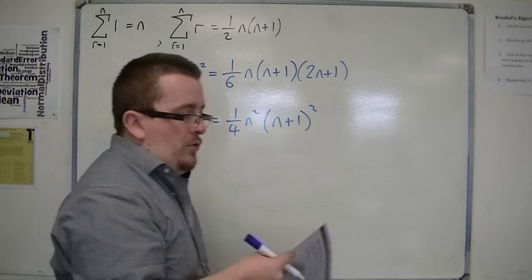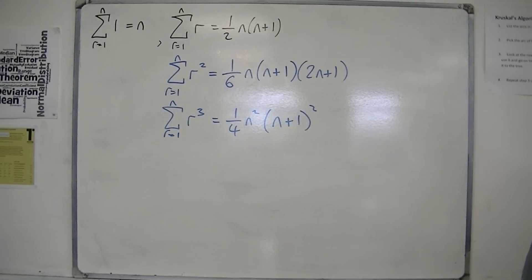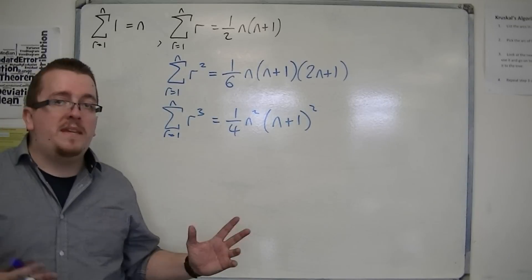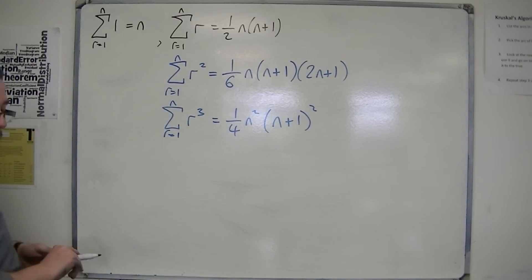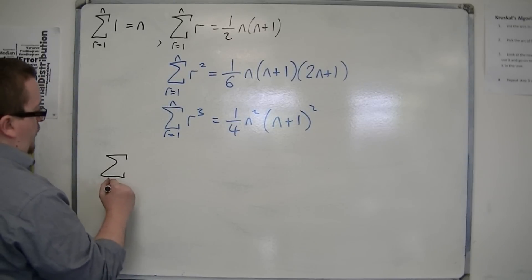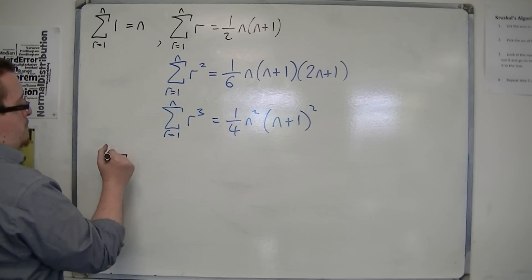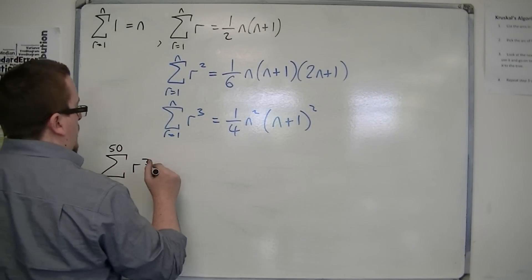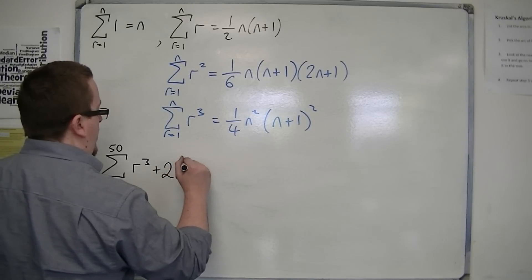So these are the two new ones that are given to you in the formula booklet. So I just want to give you an example of how they might be used. So let's say we're asked to find the sum from r is 1 to 50 of r cubed plus 2 lots of r squared.